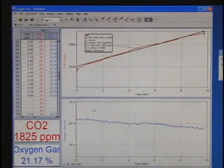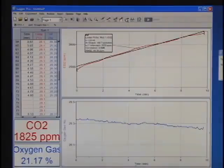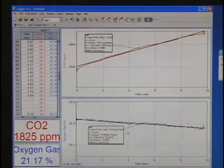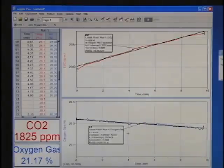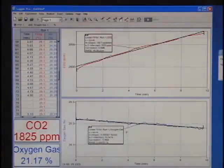Similarly, repeat this process for the oxygen gas graph. As you can see, the graphs clearly indicate that carbon dioxide is being produced and oxygen is being consumed while the peas are in the respiration chamber.